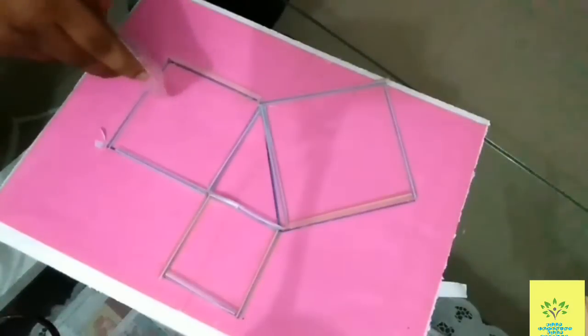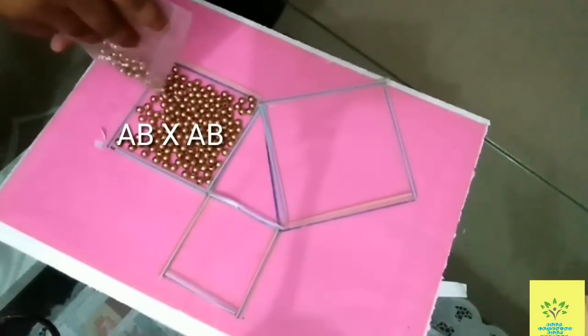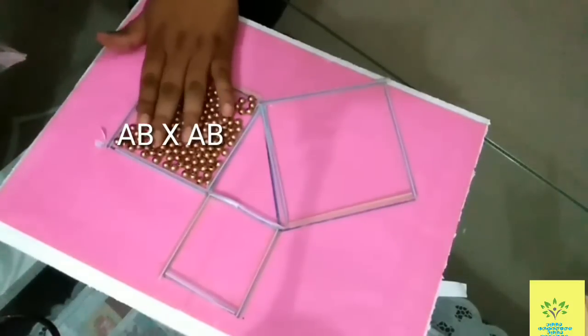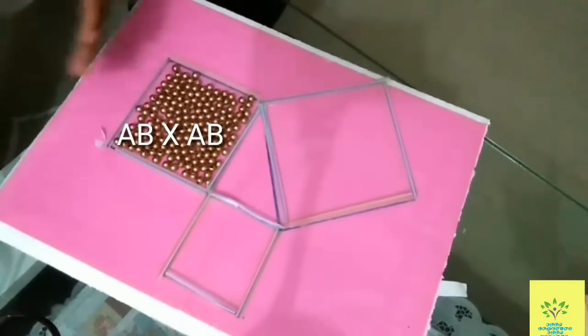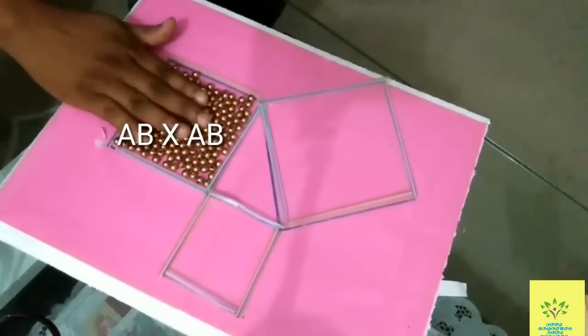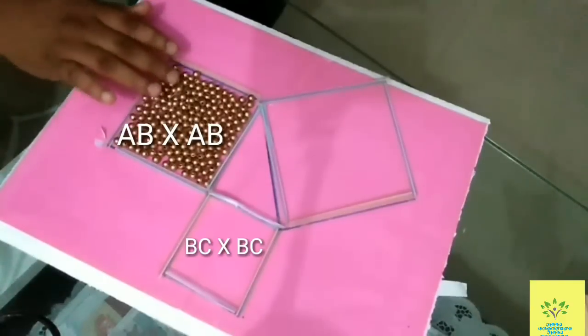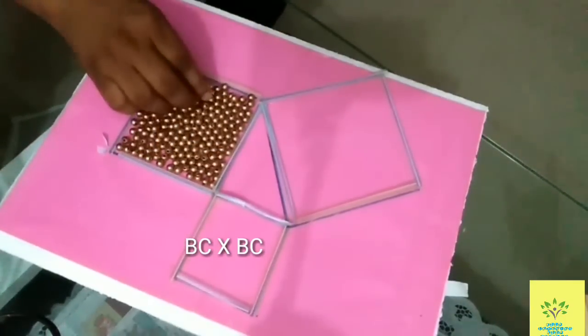is to fill both squares with the beads. This shows AB², which is the altitude, and the smaller square is BC², the base.